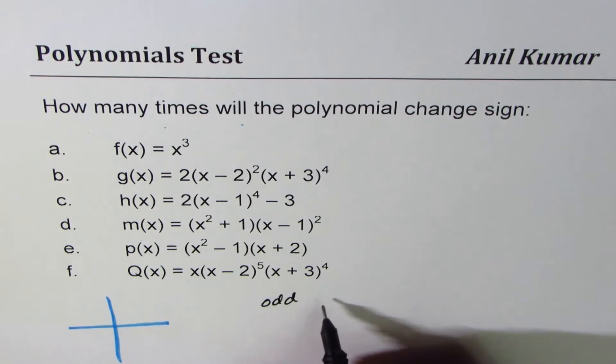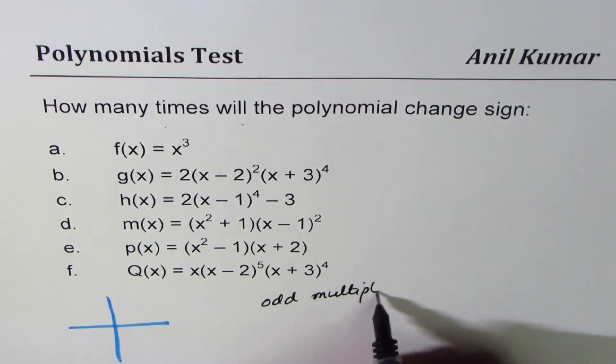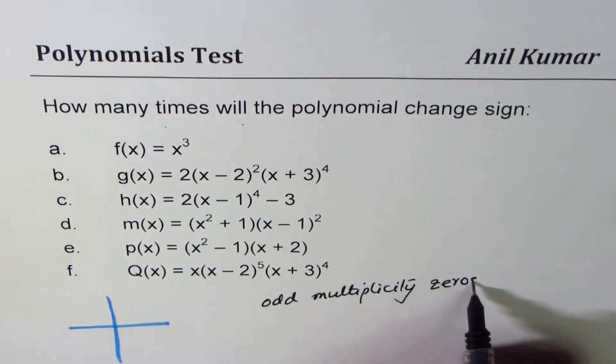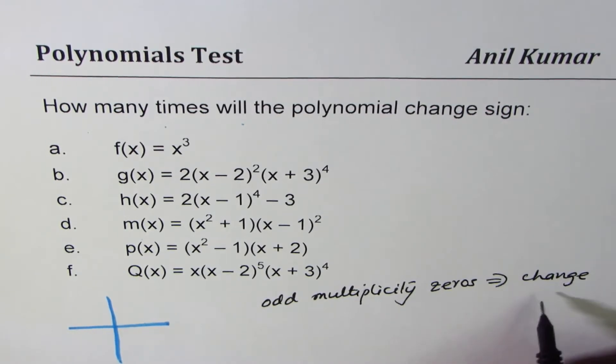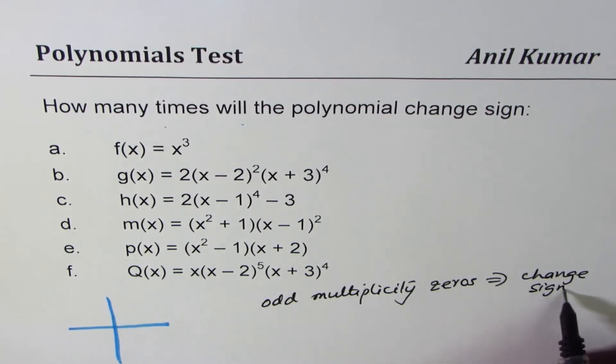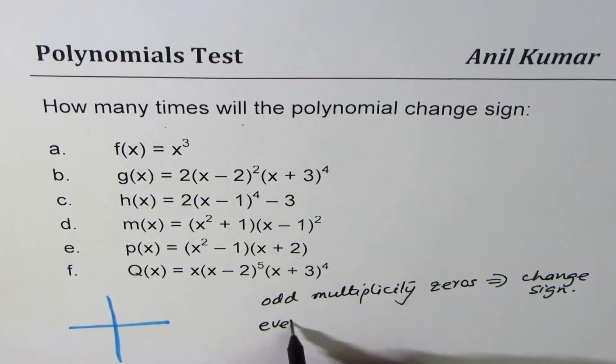So odd multiplicity zero means change sign, and even multiplicity zero means same sign.